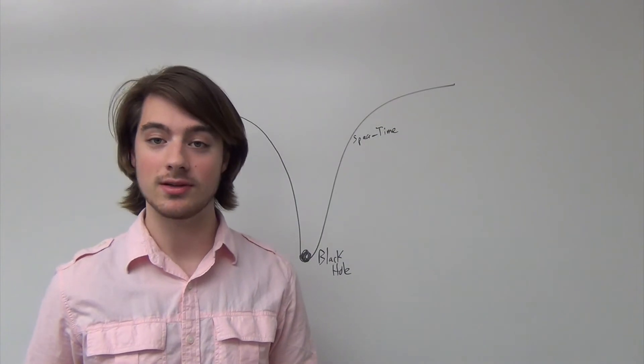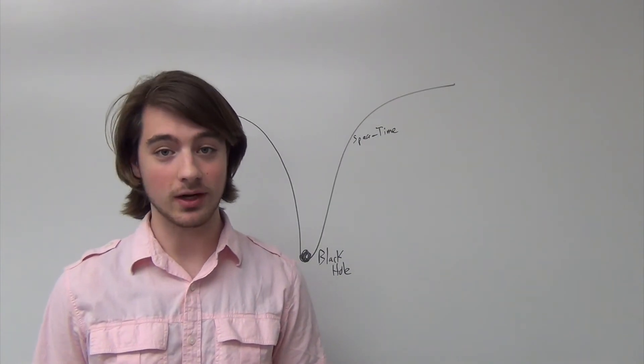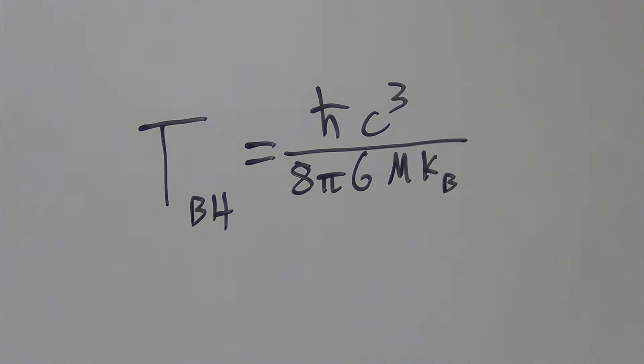Hawking calls this particle creation and concludes that black holes are black-body radiators. The temperature of this black-body radiation is defined by the following, where h-bar is Planck's constant over 2π, c is the speed of light, g is the gravitational constant, m is the mass of the black hole, and k is the Stefan-Boltzmann constant. The most interesting thing to note about this equation is that the temperature of a black hole is in fact inversely proportional to its mass.